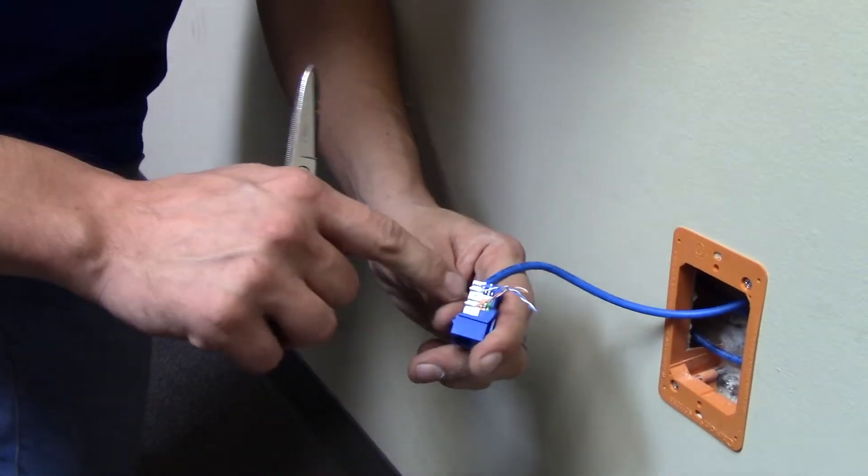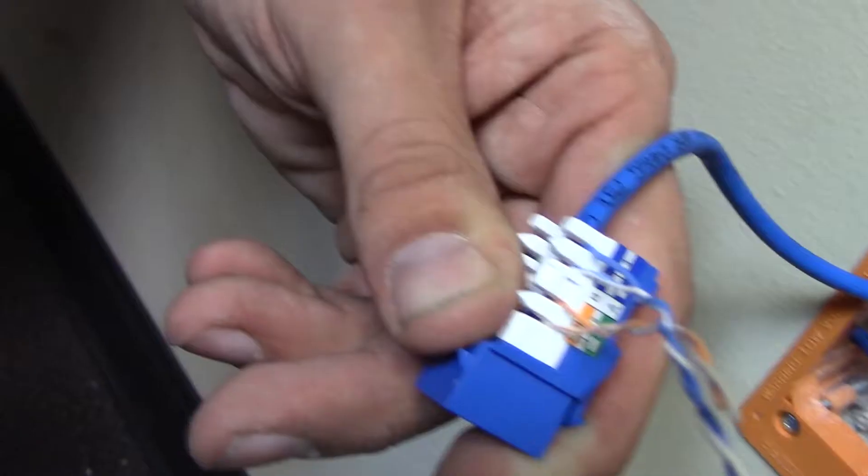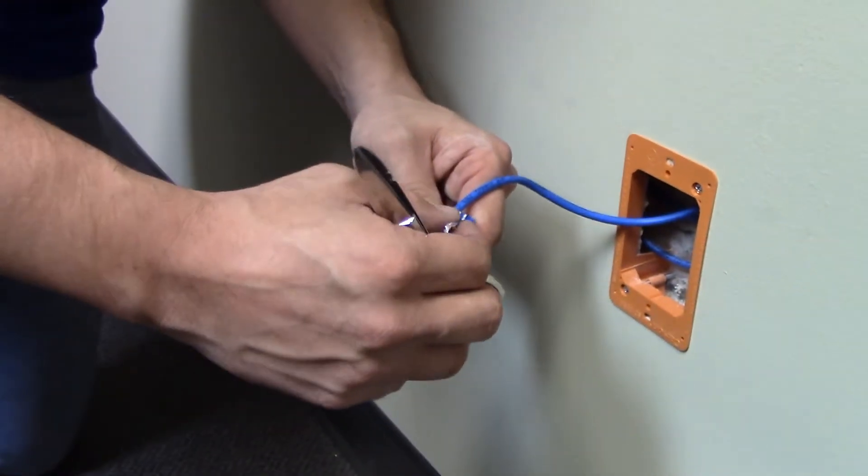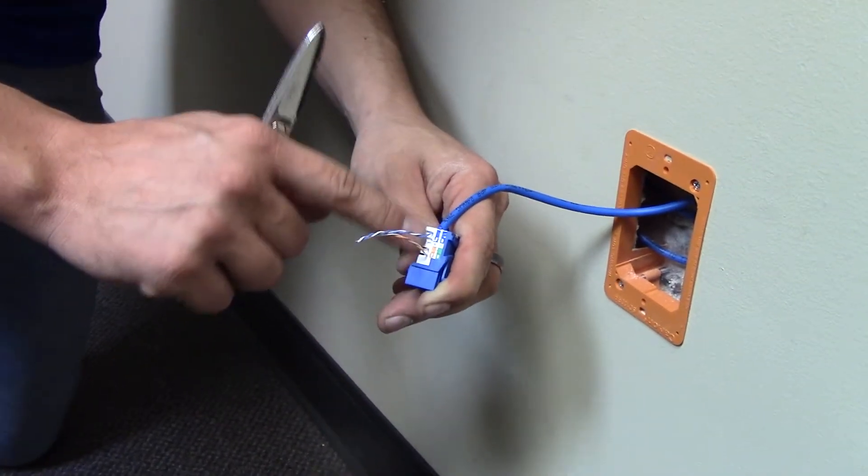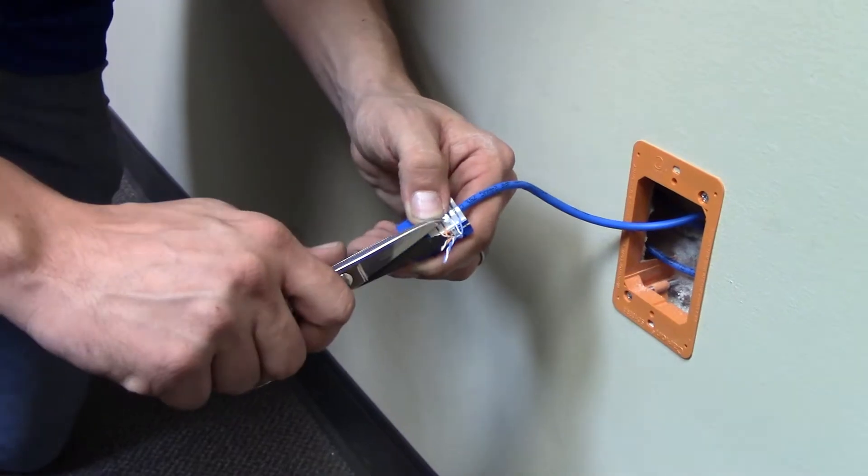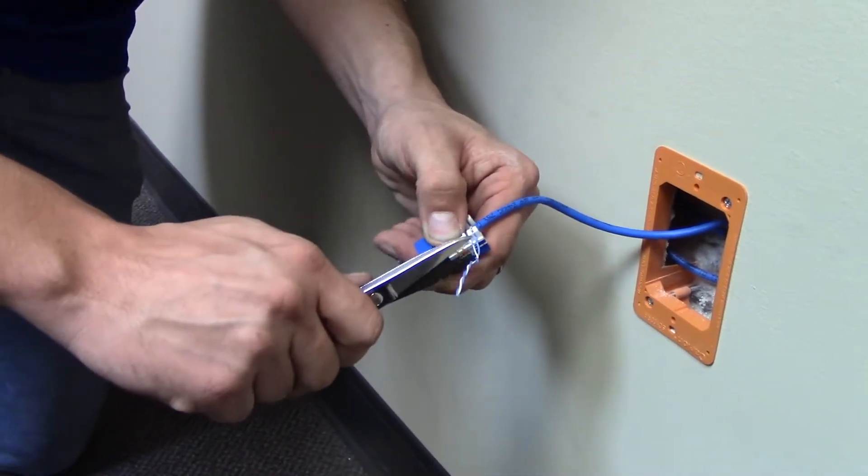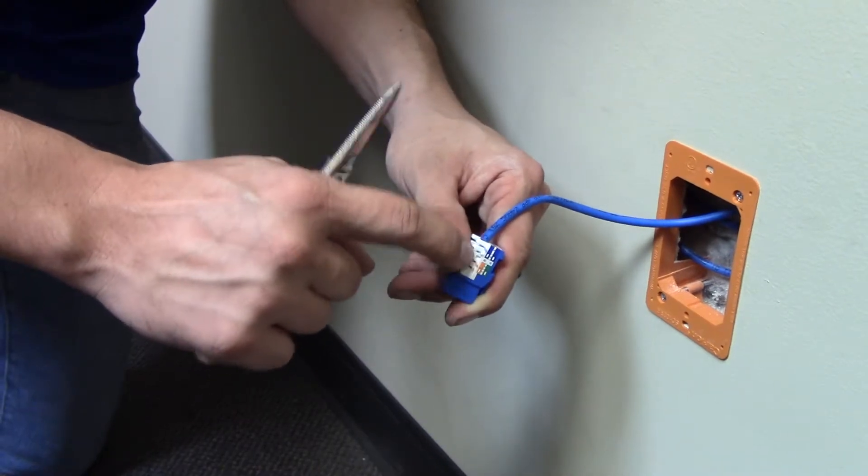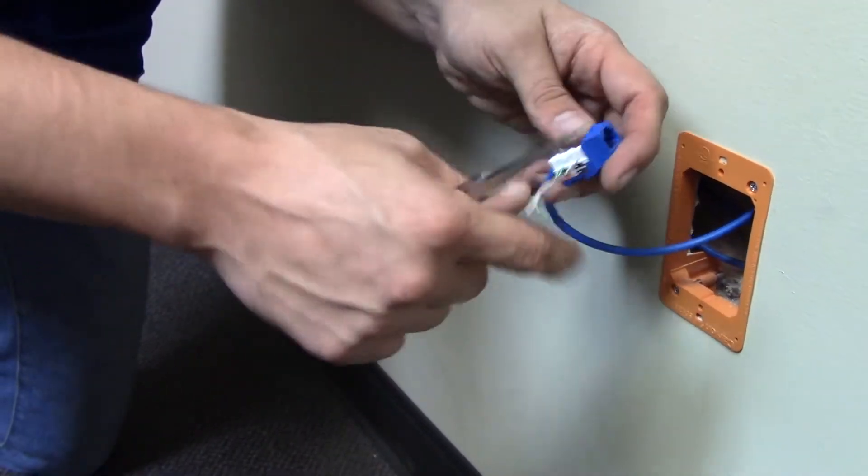So now that it's punched down, you can double check to make sure it's securely seated by making sure it's at the bottom of the teeth, each pair. So now once every pair is securely seated in the correct spot to match the color code on the side of the jack, you simply snip the pairs off as close to the jack as possible. You don't want these pairs to touch. As long as these pairs don't touch, you won't have any continuity issues.